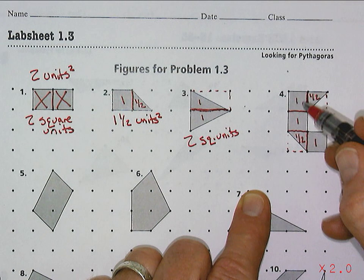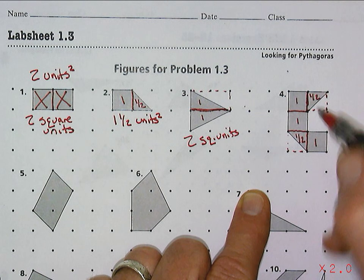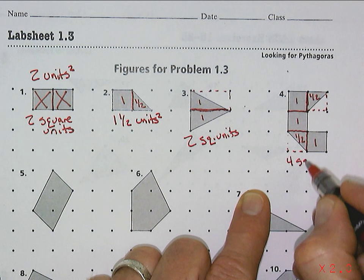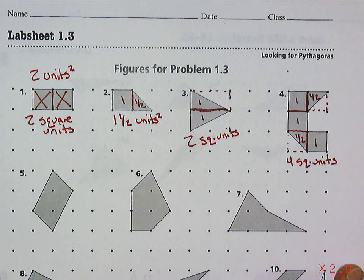So if we put all those together - one, two, three, and then the two halves make one whole. So number four, the area is four square units, or four units squared.